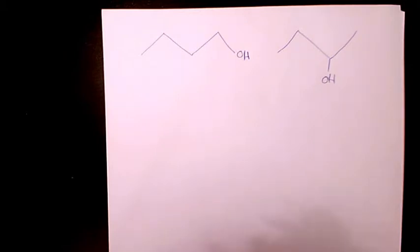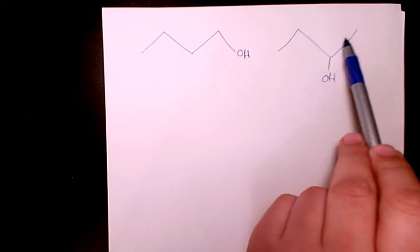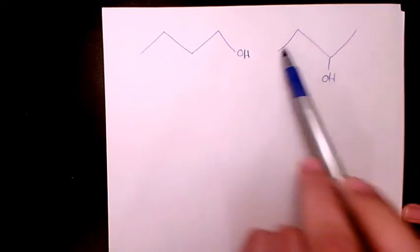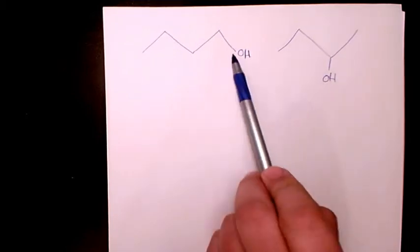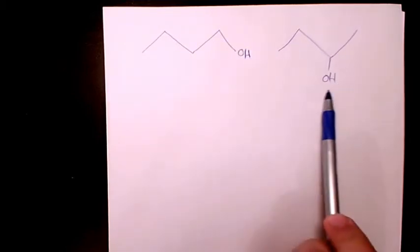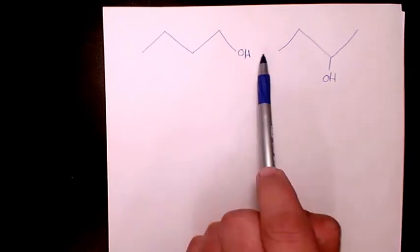So as you see here we have 1, 2, 3, 4 carbons. We are dealing with butane and this hydroxyl group shows that we have alcohol in this case.